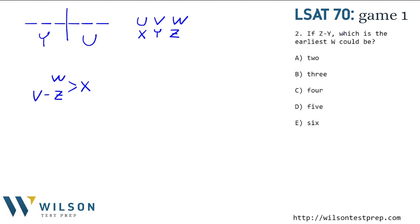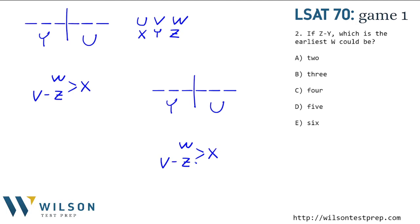Number two says: if Z is before Y, what is the earliest spot that W could be? So let's make a copy of our diagram so we can make changes. We have a new hypothesis: Z is before Y. I'm going to add that to the diagram. And now I'm looking at V before Z before Y, knowing that Y is one of the first three spots. The only way to keep Y in the first three with this being true is to put V, Z, and Y in spots one through three.